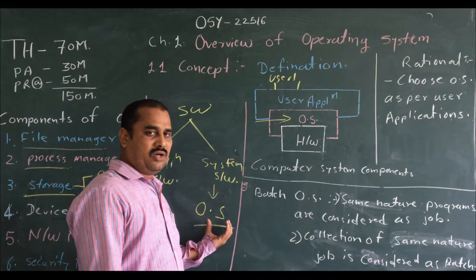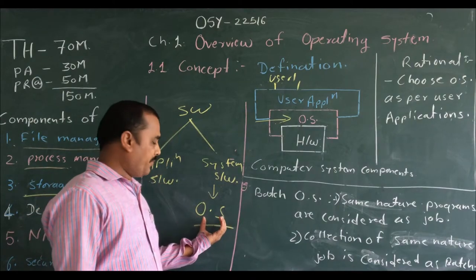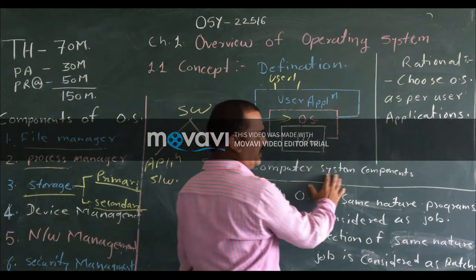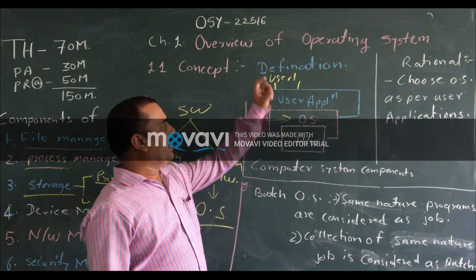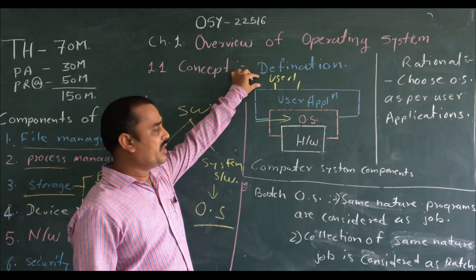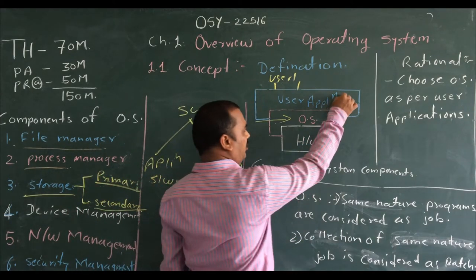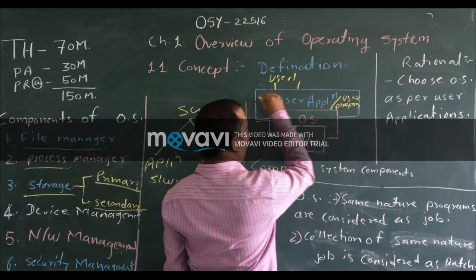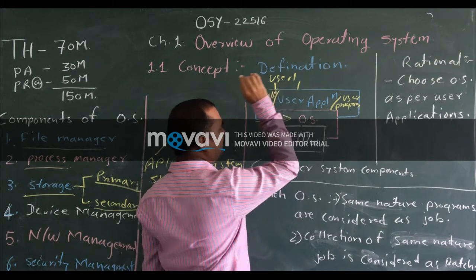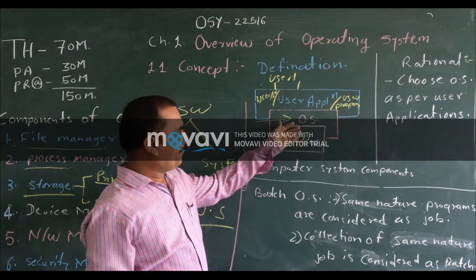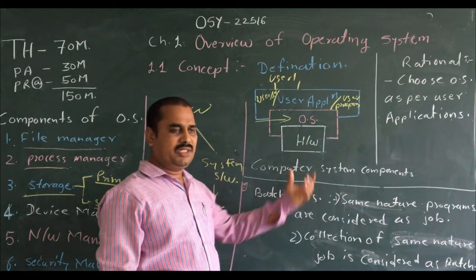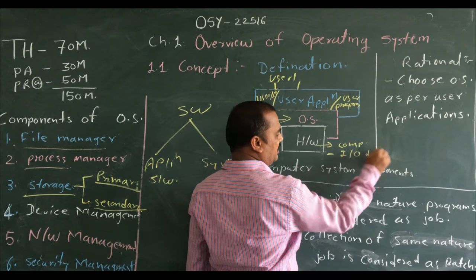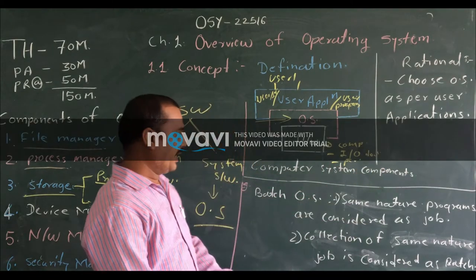To clearly and deeply define the operating system, we refer to this diagram — the computer system components diagram. In this diagram, the first component is the user, then the user applications, or simply user programs, or user interface. Then the operating system itself is there. Then it is the hardware — all the hardware of the computer system, including I/O devices, peripheral devices, etc.